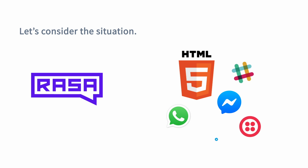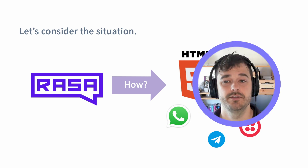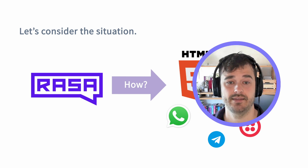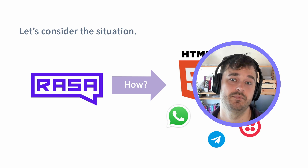It doesn't stop there, though. You might be interested in having your assistant run over Telegram, maybe over Slack, or maybe over text messages by using the Twilio API. In this video, we're going to talk about the larger Rasa architecture, and how you can have Rasa communicate to the outside world on these different channels. We're also going to demonstrate how to get a Rasa Assistant working on a demo website. Before showing you how to do this, it's better to take a step back and look at the bigger picture.